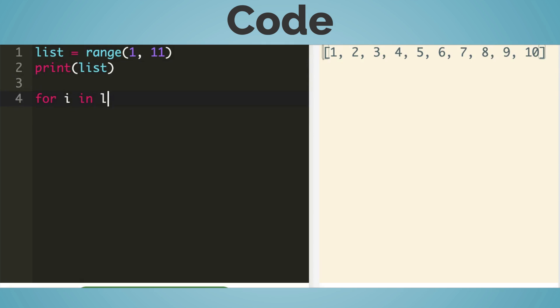Let me create for i in list, print i. Oh, I got 1 to 10 another way in the output.